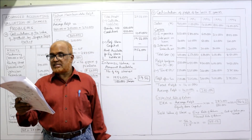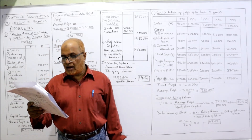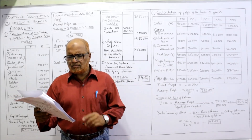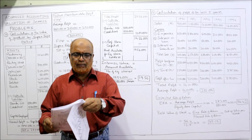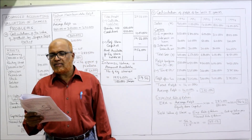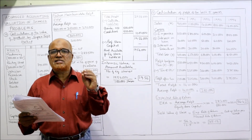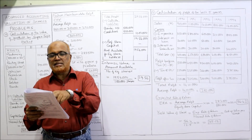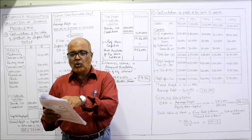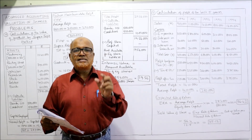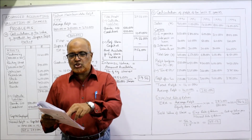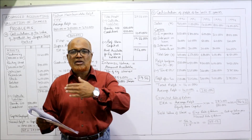Debentures were issued at par on 1st January 1990 and are redeemable at par on or before 31st December 1999. This is just background information. For the five years ending 31st December 1990–1994, information is given: sales every year, expenses, interest on loan, and interest on debentures. Sales are revenue; expenses, interest on loan, and interest on debentures are all costs.